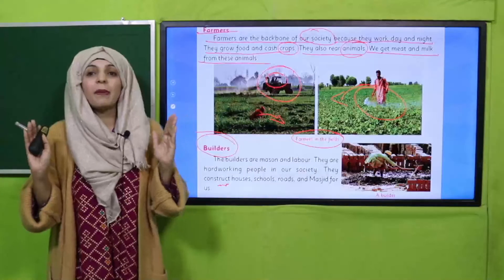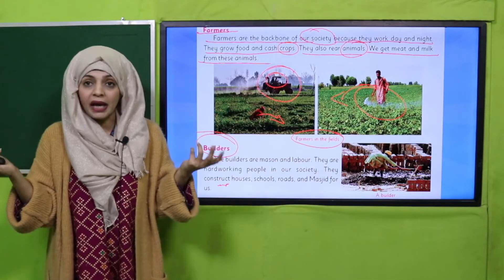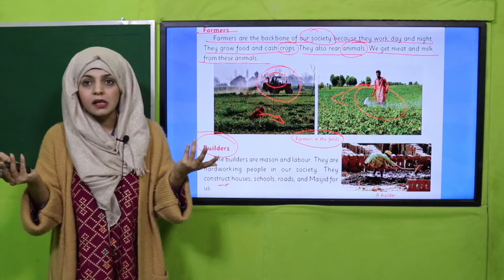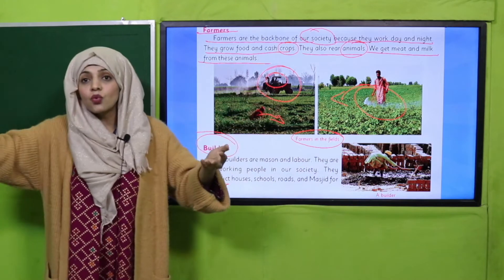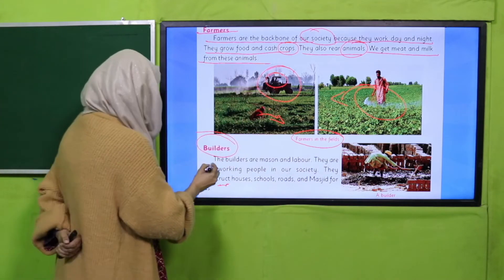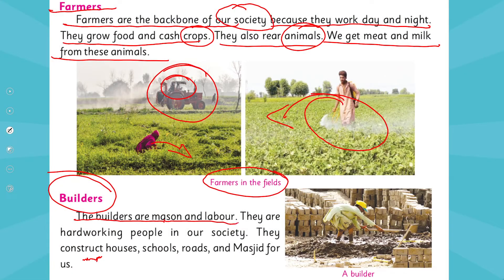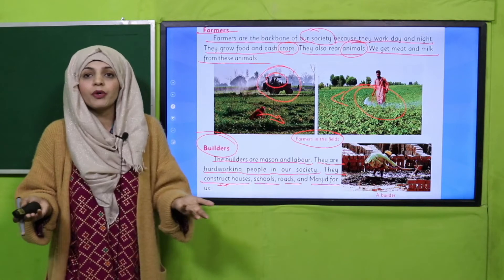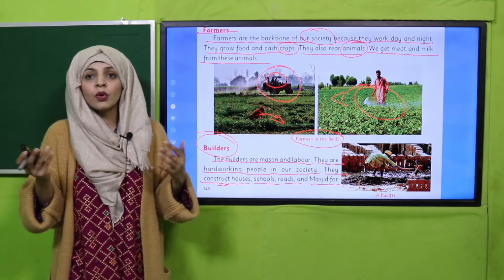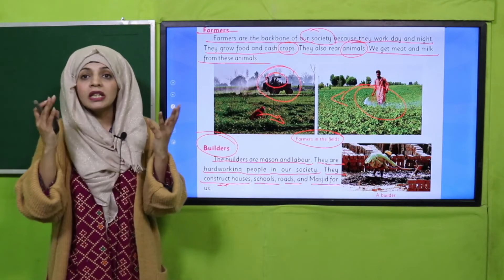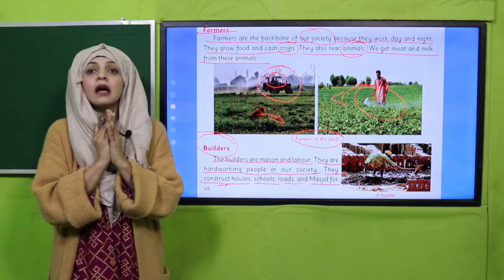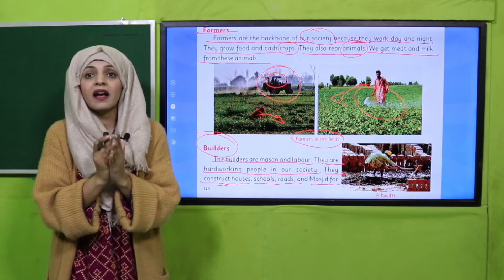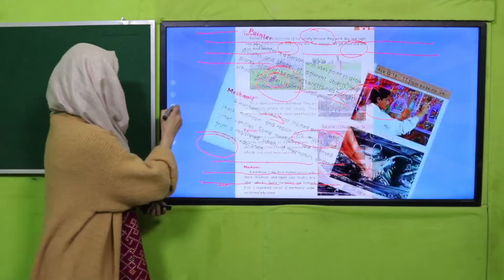Next come builders. Think about it: the building you are sitting in at home or at school — somebody built it. These buildings are built by builders, so this is another human resource that helps you by constructing buildings, schools, and plazas for you. Let's read: 'Builders are masons and laborers; they are hard-working people in our society. They construct houses, schools, roads, and masjids for us.' Builders are very important to us — whether they are building a road or a building. If roads are not proper, how will you travel from one place to another? If there are no buildings, how will you survive?